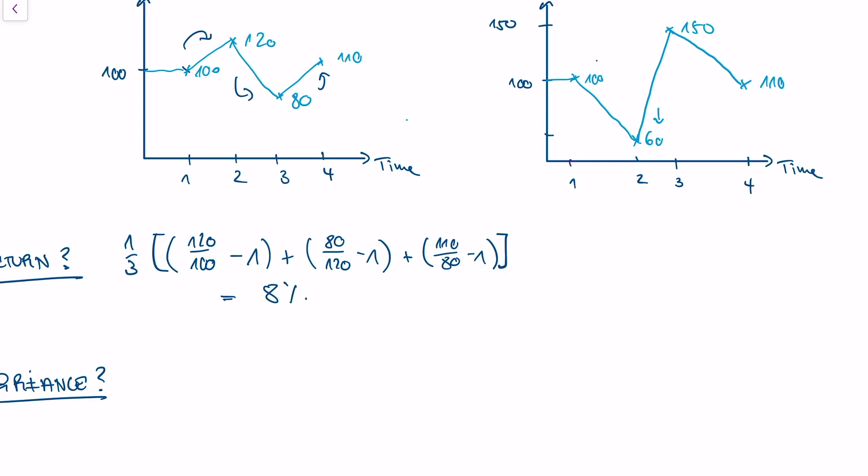And this average is equal to 8%. And I can do the same with the Siemens stock, and I will get an average of 27%.